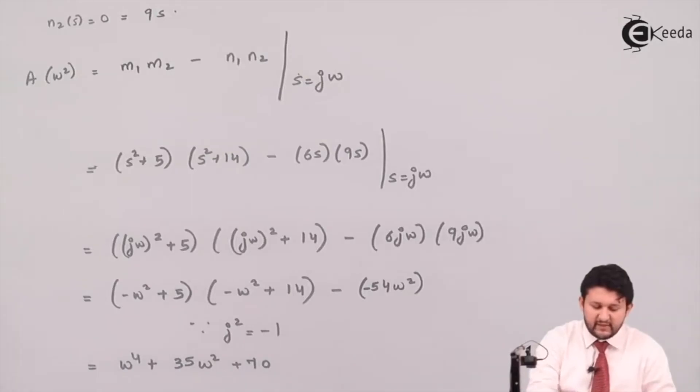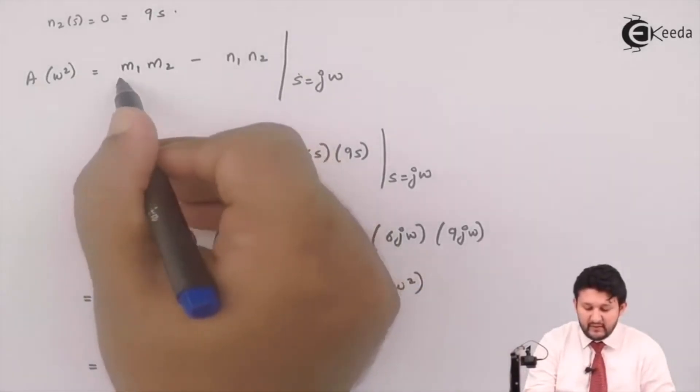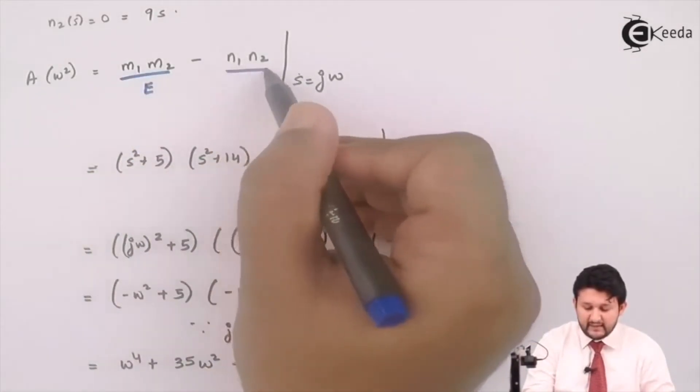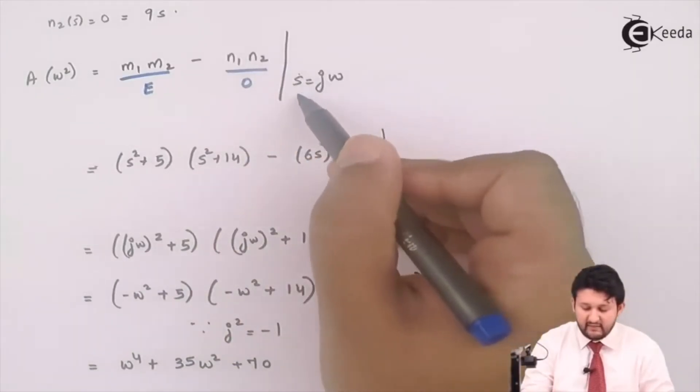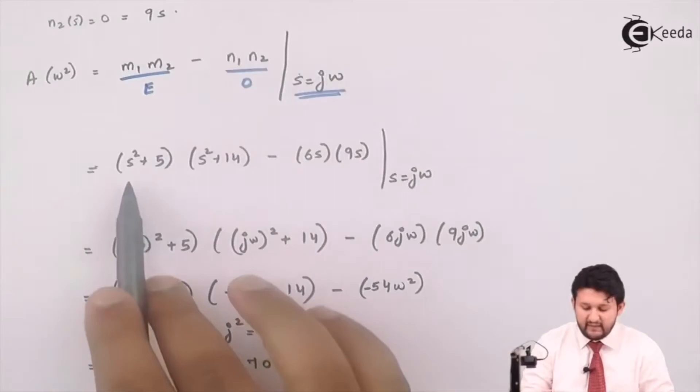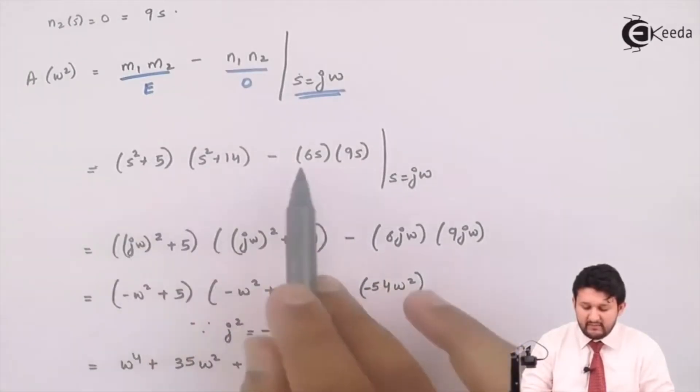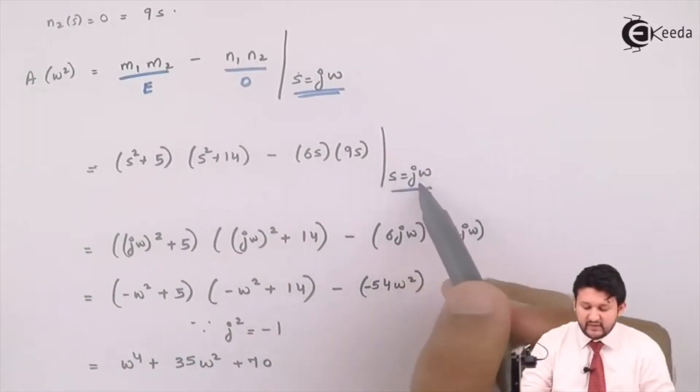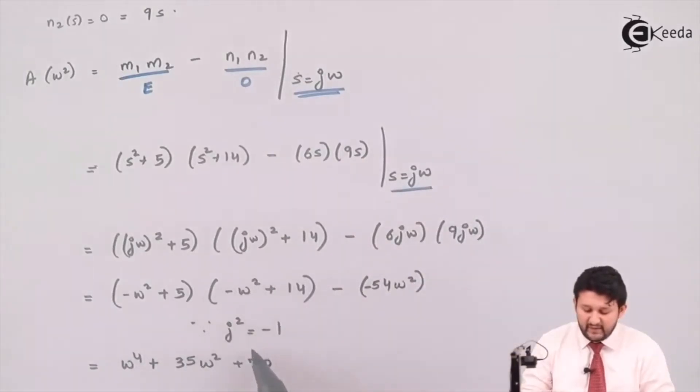The formula for A of omega squared is (m1·m2 - n1·n2) divided by (m2² - n2²). The condition states wherever you get s, you have to term it as s equal to jω. m1, m2, n1, n2 are simplified wherever you want s, you term it as jω. j is nothing but square root of minus 1. For the value of j squared, simplify it, you get this equation.